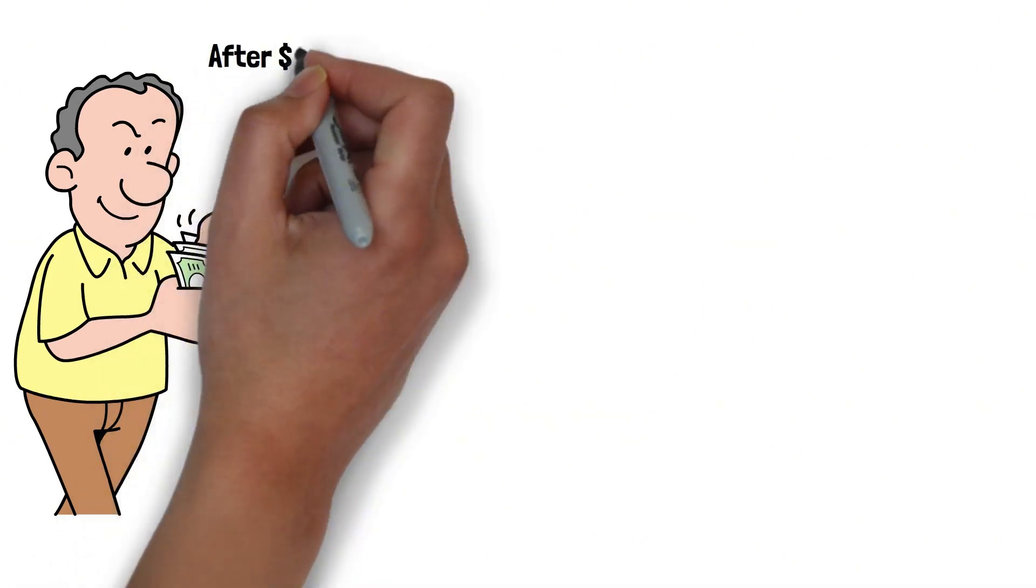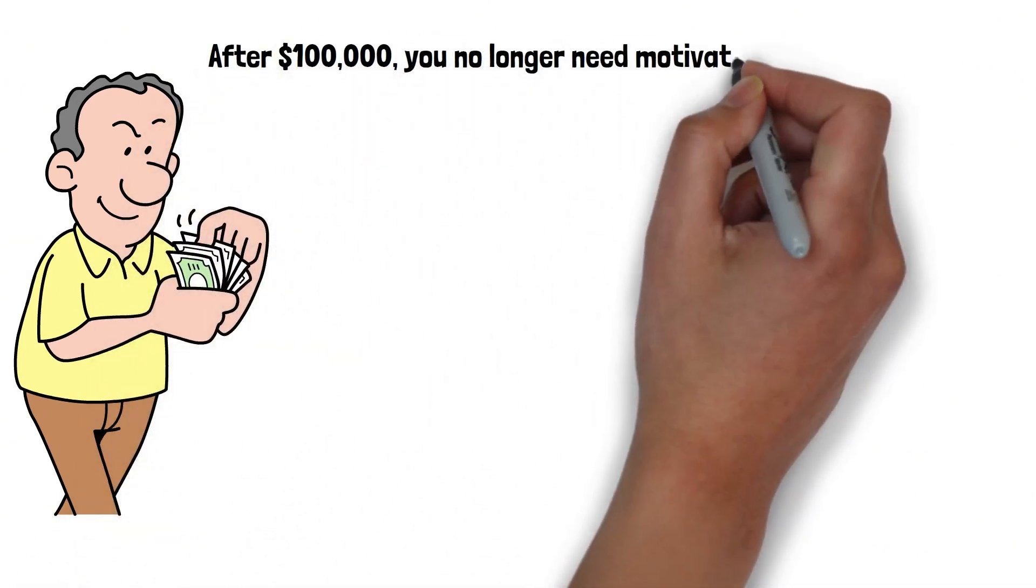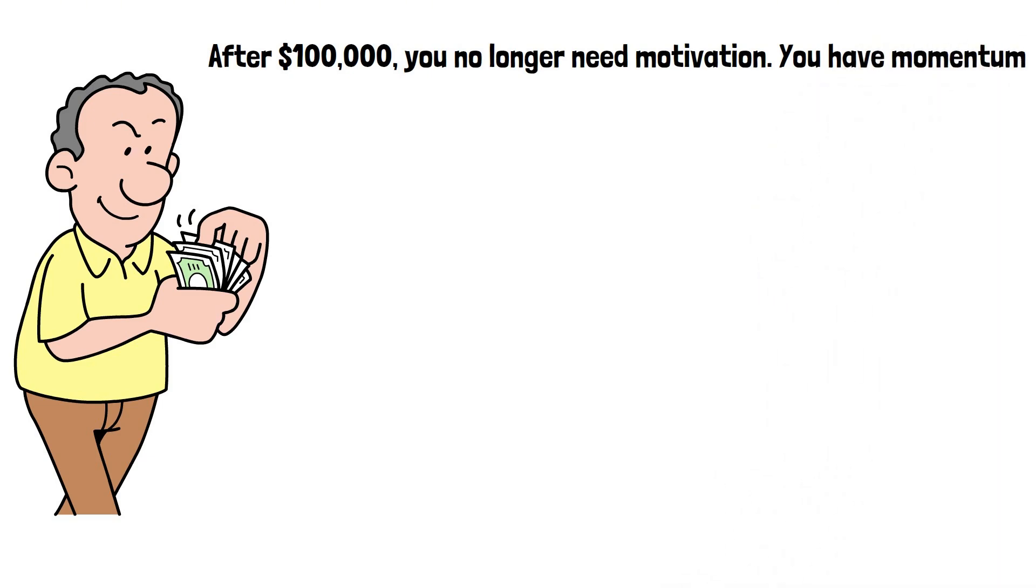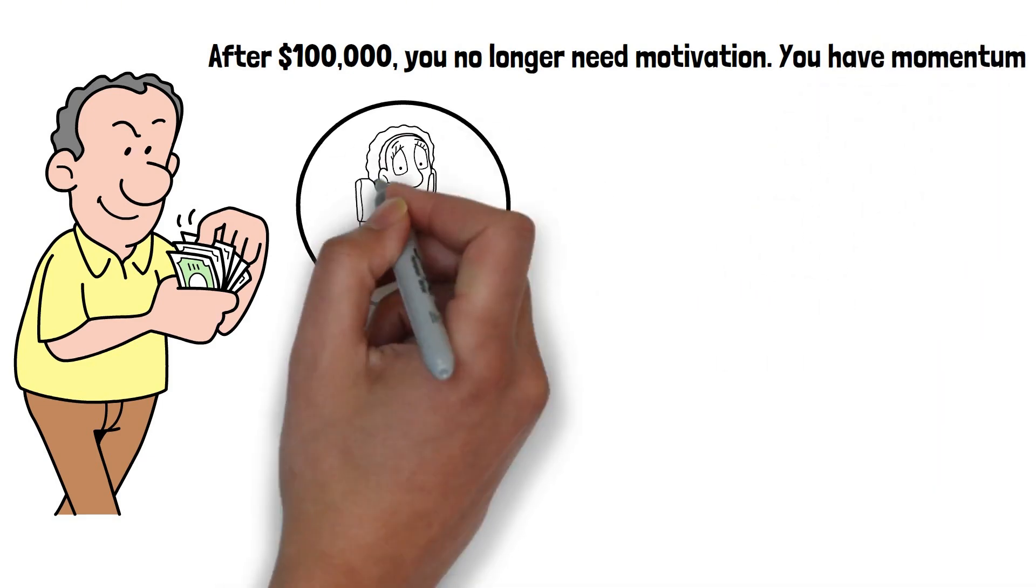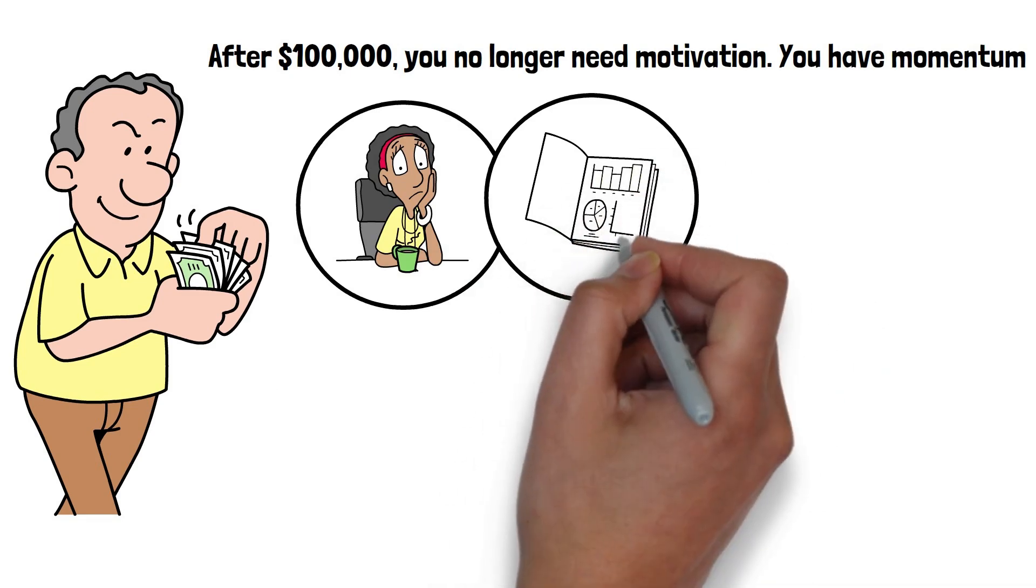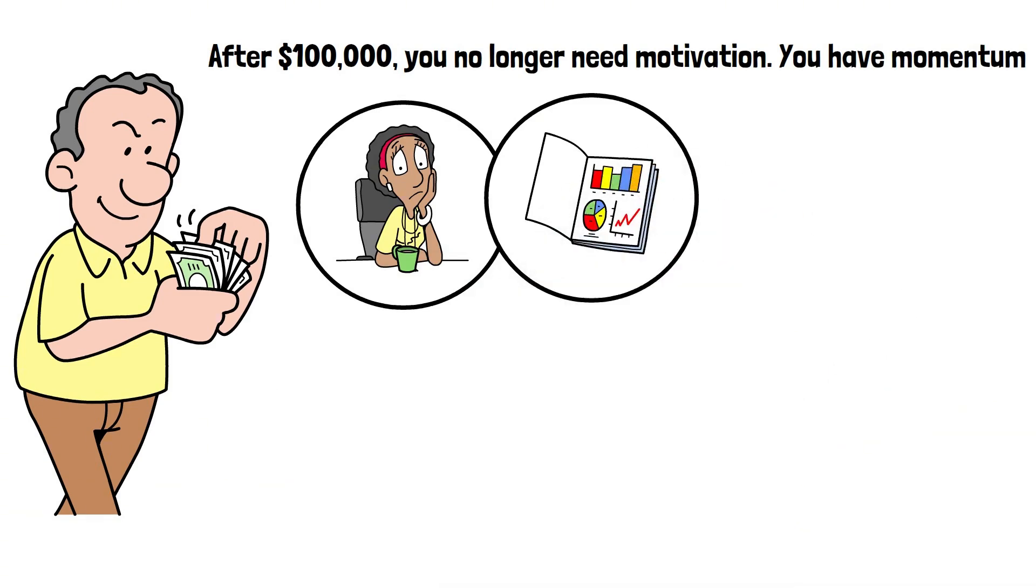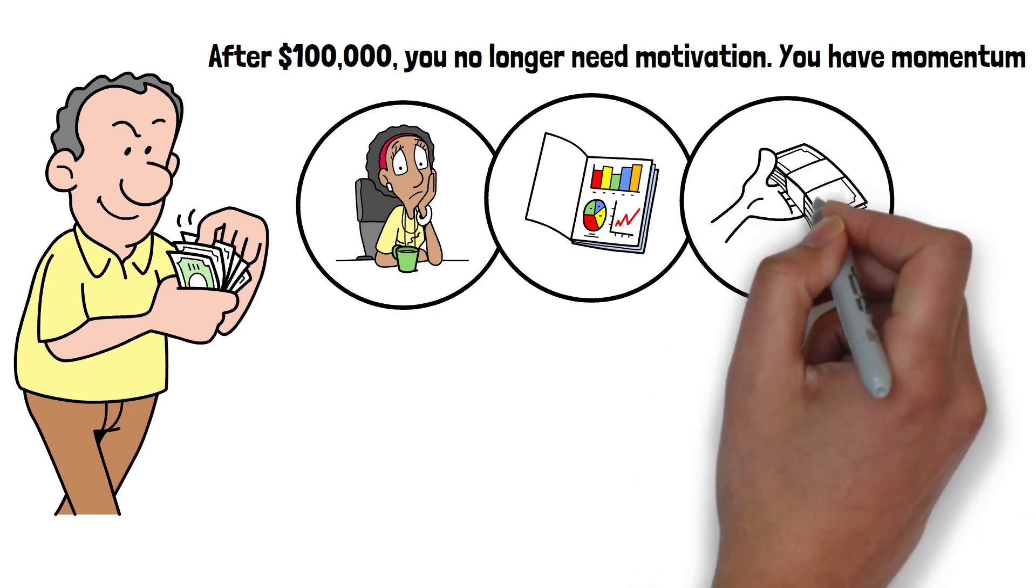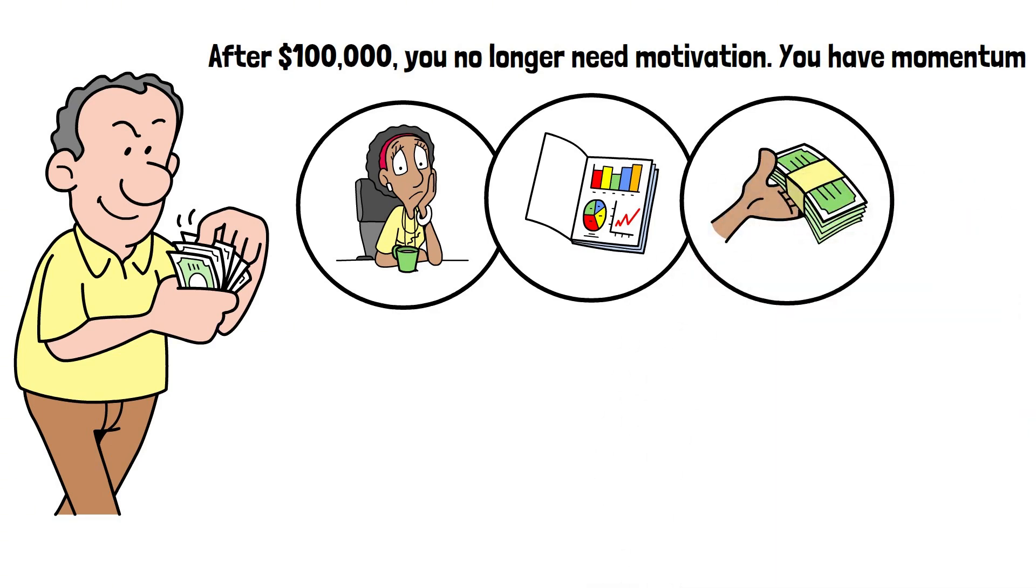After $100,000, you no longer need motivation. You have momentum. You stop obsessing over small dips because you finally understand cycles. You stop chasing the next hype stock because you trust the long-term plan. You stop seeing investing as a chore and start seeing it as a machine that builds your future in the background.